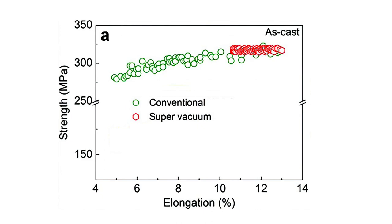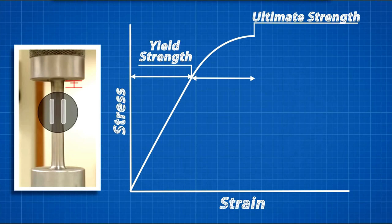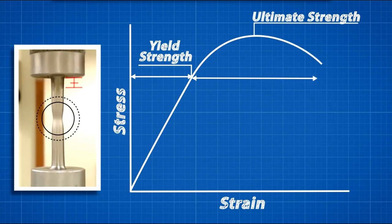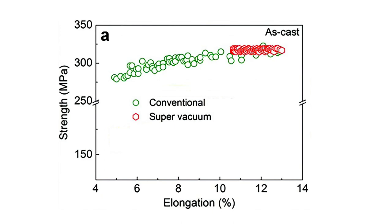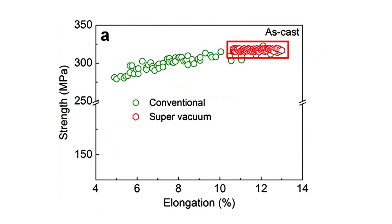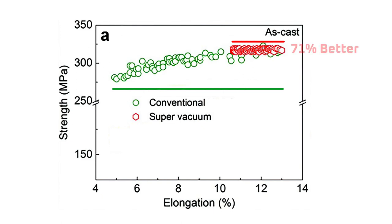Let's do a quick refresher on stress and strain to understand what's meant by strength and elongation. As a video by Real Engineering shows, ultimate strength measures the maximum amount of stress a metal can handle before fracturing. Elongation measures strain, which is a measure of how far a metal can stretch before fracturing. Looking at the test results, the green circles are from conventional non-vacuum assisted high pressure die cast parts. The red hexagons are from parts formed with vacuum assisted high pressure die casting. The graph tells us that the vacuum-formed parts were, on average, 5.6% stronger and could stretch 43% farther before fracturing. Furthermore, because the red hexagons are clustered in a tighter pattern, the test results were more consistent. The researchers found that consistency for elongation measurements improved by 71%.